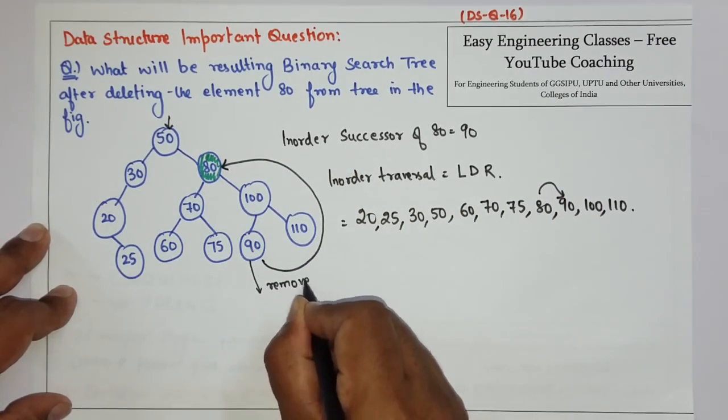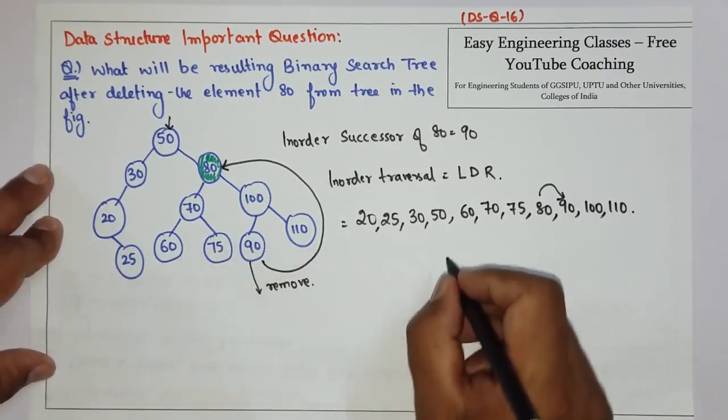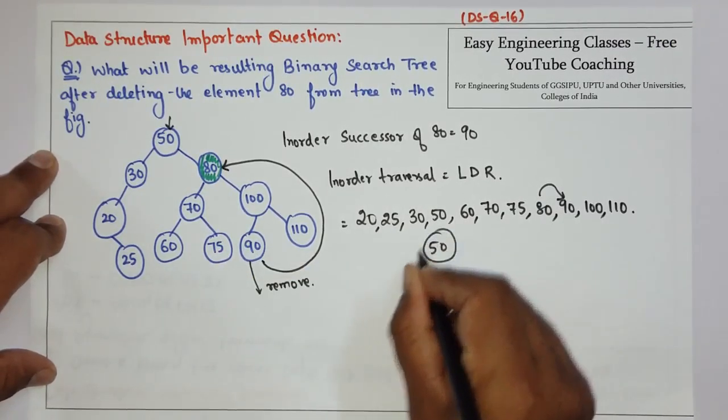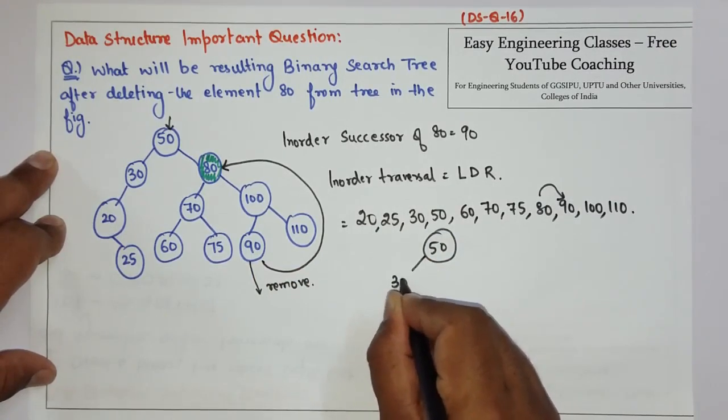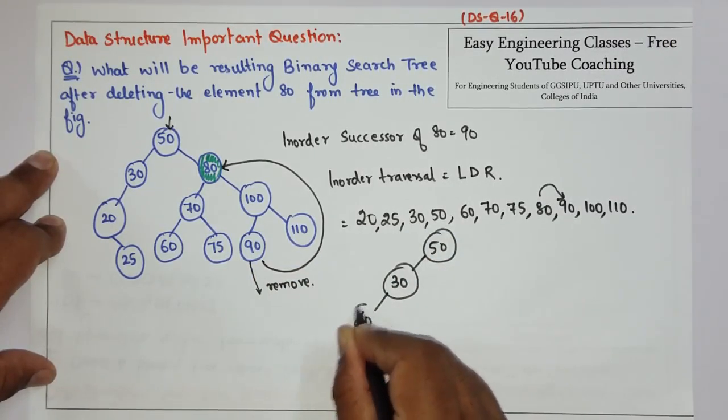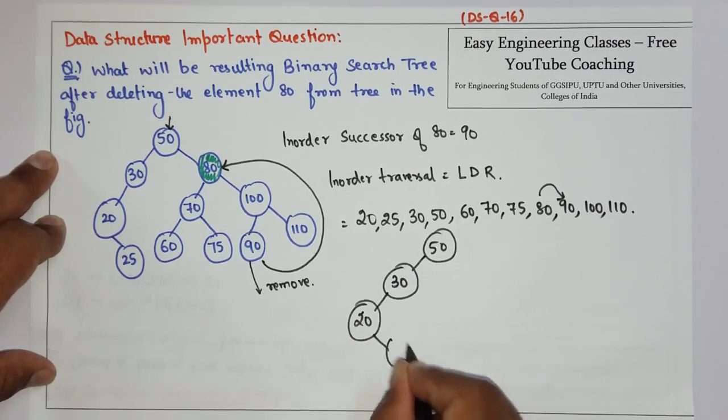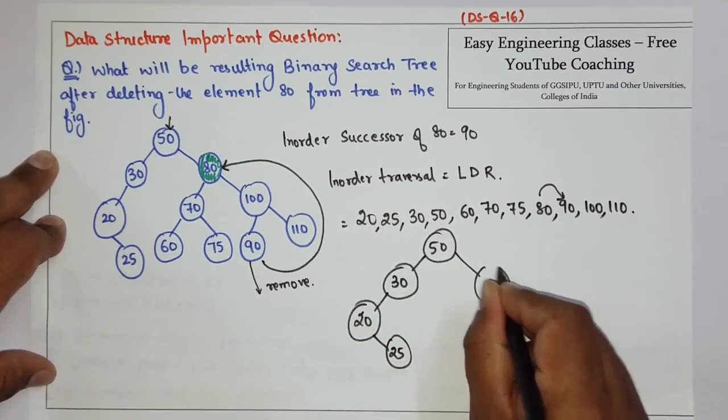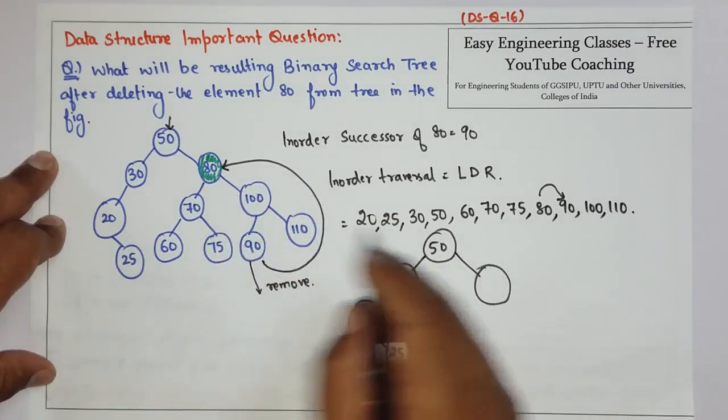So 50, 30, 20, 25, and in place of this 80, now 90 will come.